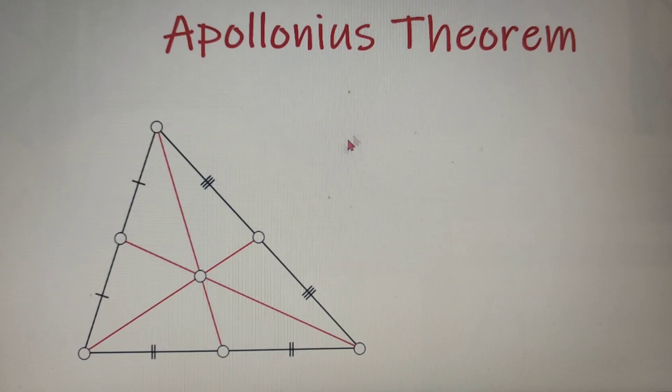Now before moving on to the Apollonius theorem, we should know what is a median. So median of a triangle is nothing but a line joining from the opposite vertex to the base of the triangle and it divides the base into two equal halves.